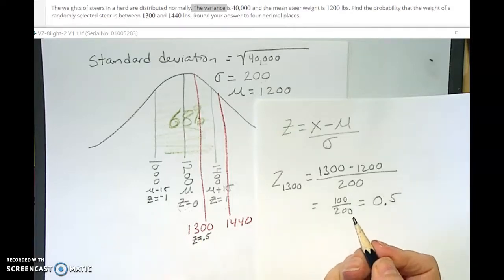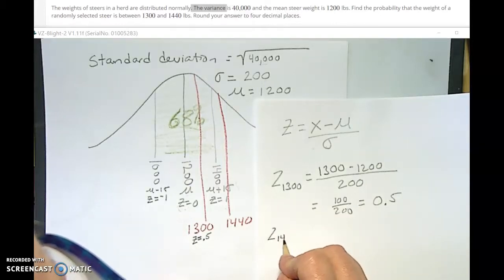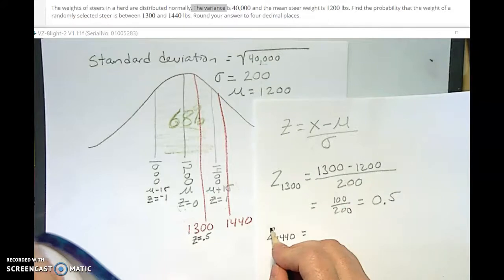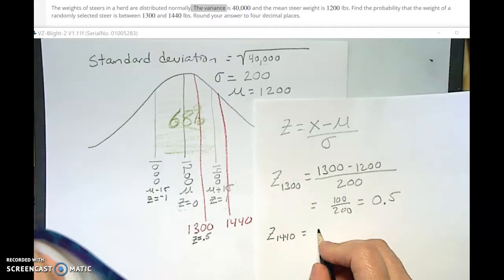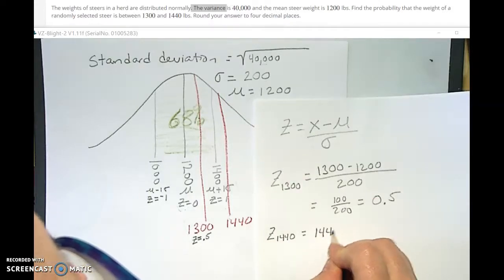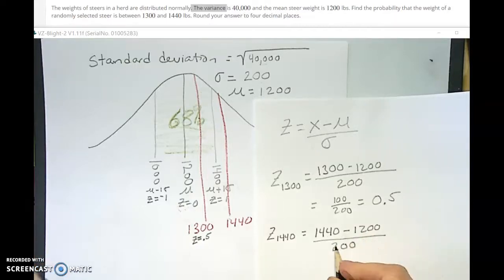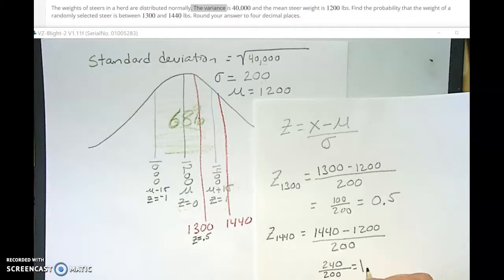This is 0.5 above the mean, half of a standard deviation above the mean. And then we're going to do our second z-score, our z-score of 1440, which is our x, which is our place. I'm going to cross my z's because mathematicians cross their z's so you can tell it's not twos. Maybe we all have messy handwriting. But it's 1440 minus 1200 over 200. So we get 240 divided by 200, which is going to give us 1.2. So we have our two z-scores, the z-score of 0.5 for this one, and a z-score of 1.2 for this one.